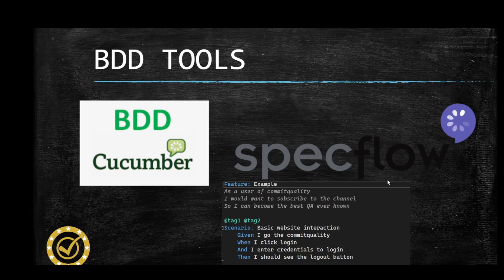Here we have an example of a SpecFlow Reqnroll feature file. When formulating your BDD, you create it in a language known as Gherkin, which has key terms you'll see across all different tools. First, you have the feature — a representation of a piece of functionality that delivers value to the user, typically with a description like 'as a user I want to do something so I can be confident in X.' Then you have the scenario, a concrete example that illustrates the behavior of a feature. The key keywords are given, when, and then. Given describes the initial context, when describes the action or event, and then describes the expected outcome.